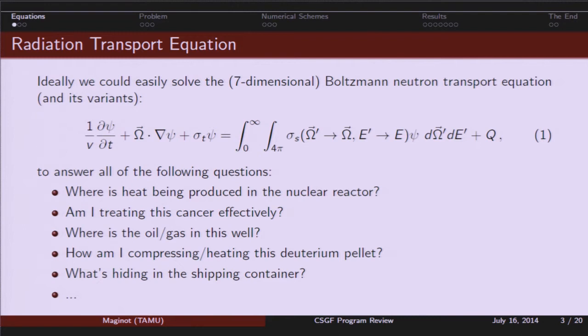Omega is the direction of particles. E is the energy of particles. V is their velocity. And these sigmas, sigma t and sigma s here, are interaction rate cross sections. So you shouldn't think of them so much as, I'm not going to talk about the cross section of a nuclear reactor, I'm going to talk about how interaction probabilities are discretized in space.